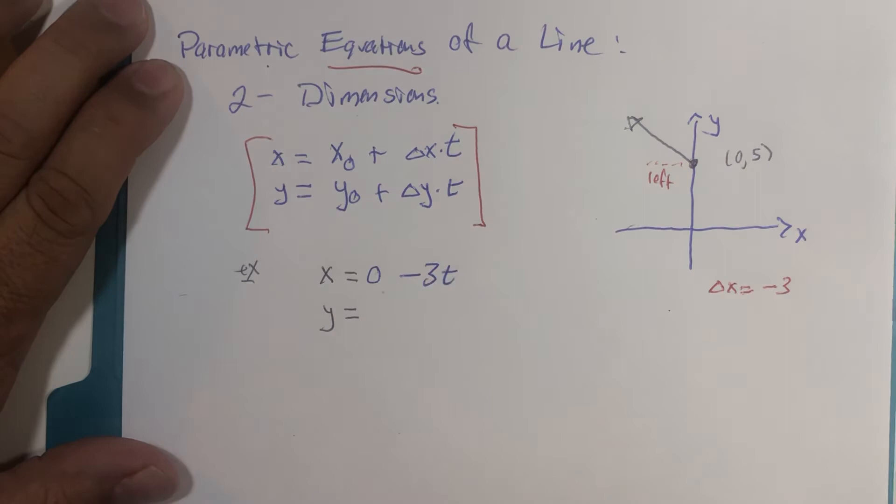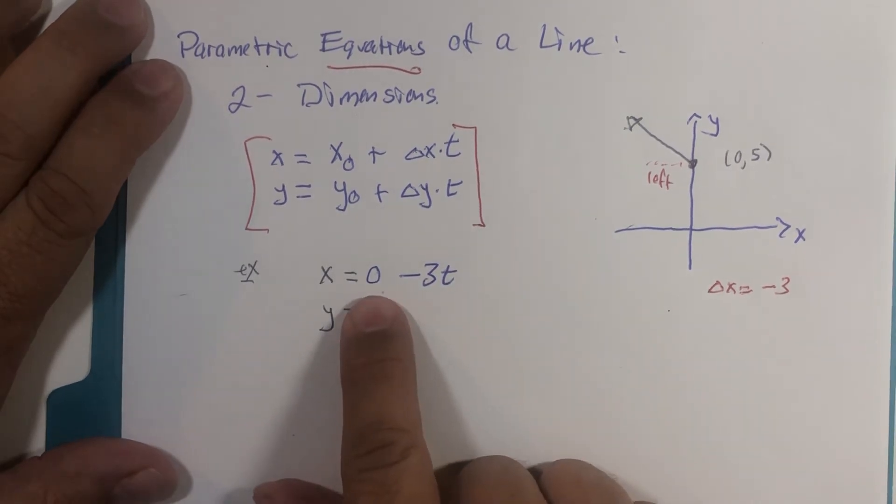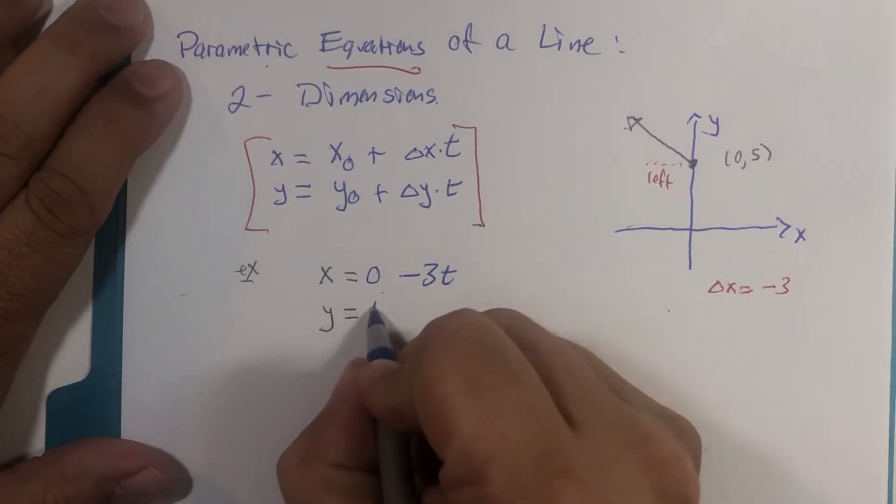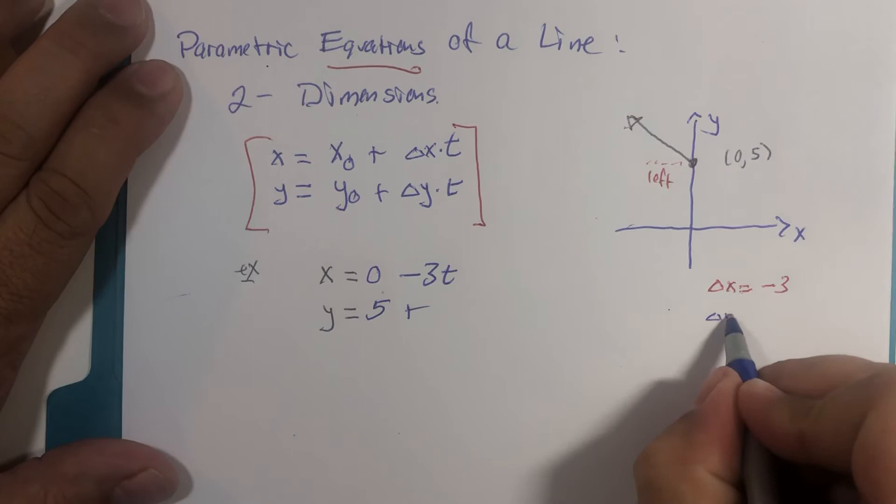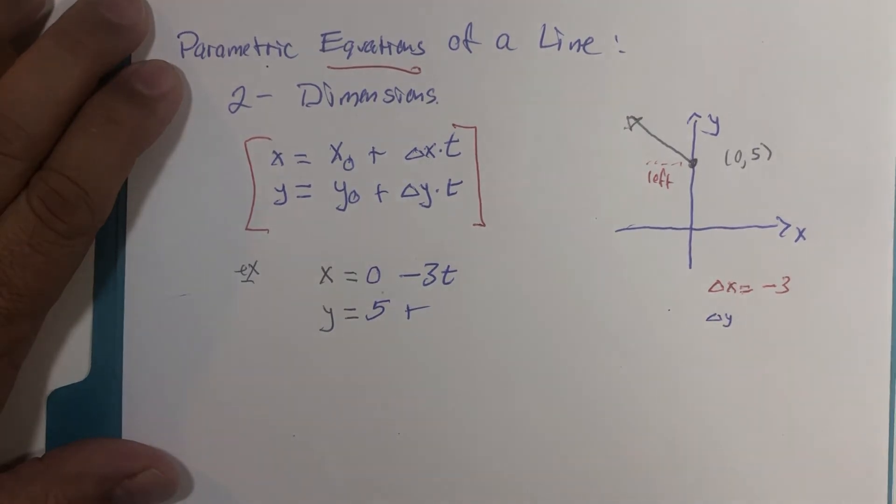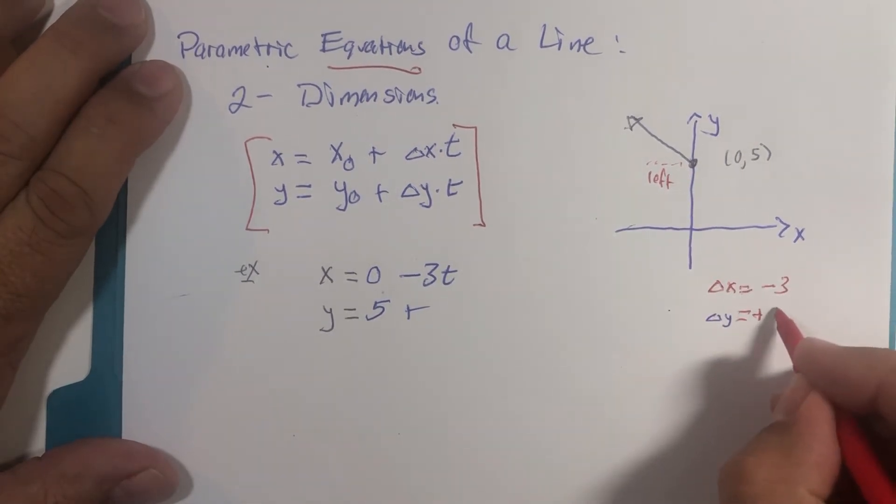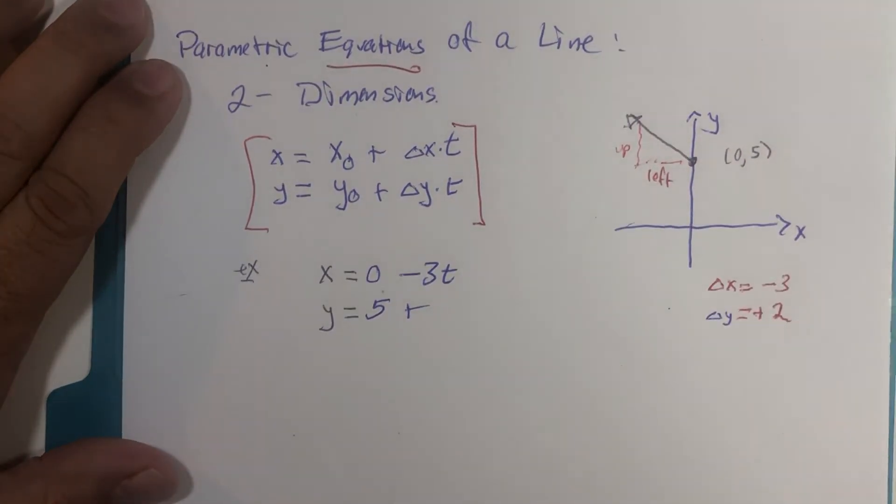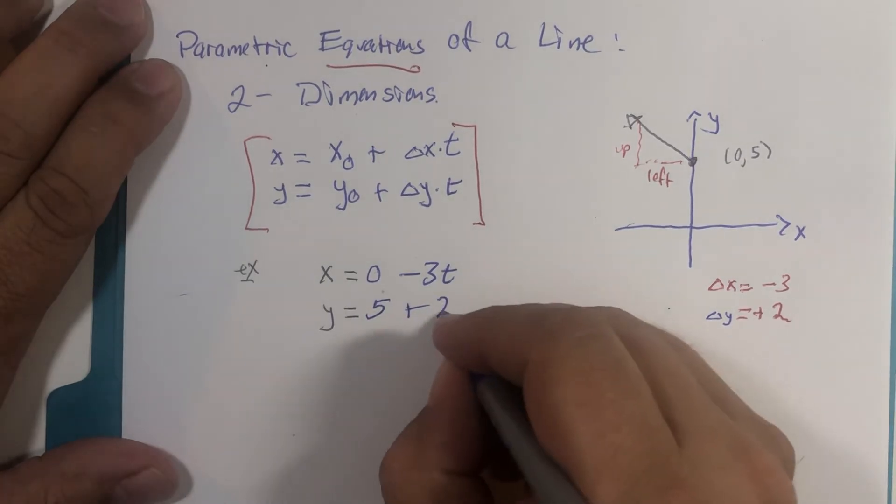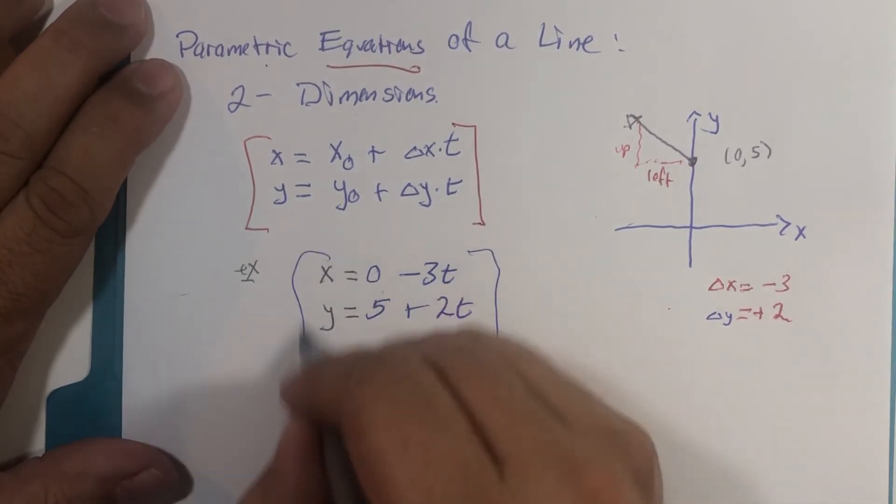So my statement here is that when x begins at zero and then it goes left three units for every second, for every unit of time, well the y value starts at five and it goes up, it increases. Let's say that the y value increases by two. So left three, up two units. Then these would be the parametric equations of that line: x = 0 - 3t, y = 5 + 2t.